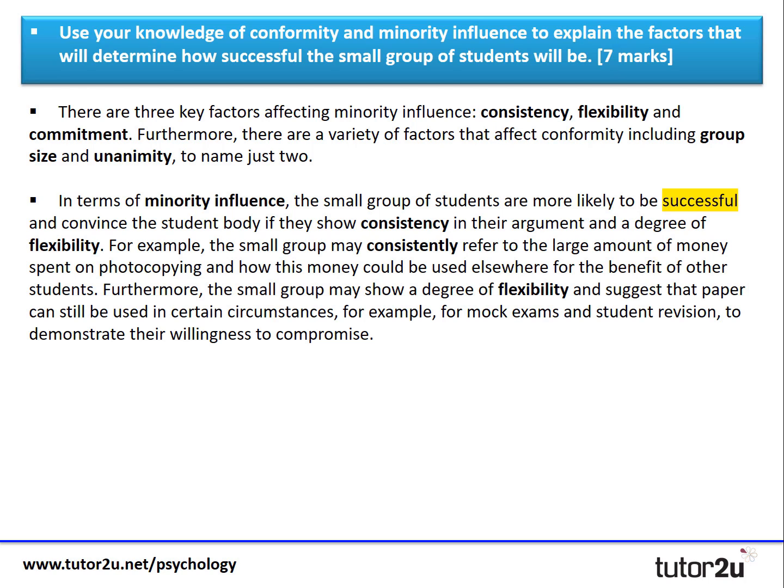In terms of minority influence, the small group of students are more likely to be successful and convince the student body if they show consistency in their argument and a degree of flexibility. For example, the small group may consistently refer to the large amount of money spent on photocopying and how this money could be spent elsewhere for the benefit of other students. Furthermore, the small group may also show a degree of flexibility and suggest that paper can still be used in certain circumstances — for example, mock exams and student revision — to demonstrate their willingness to compromise.